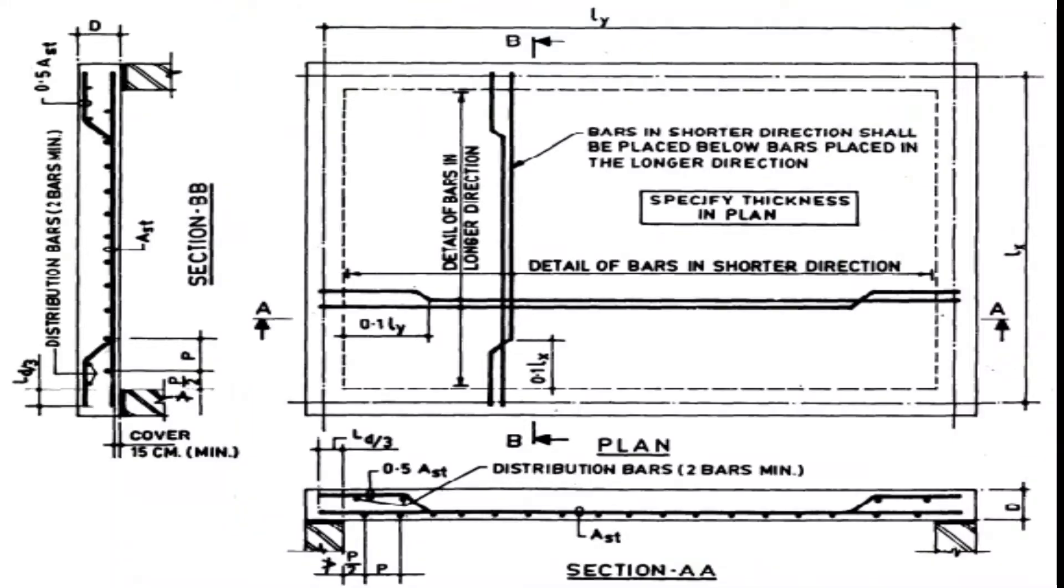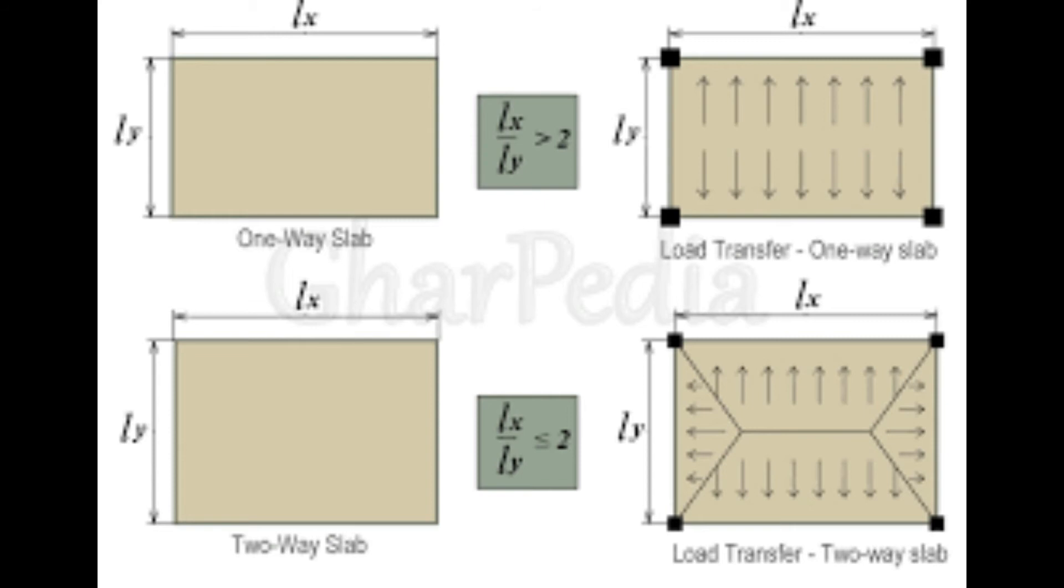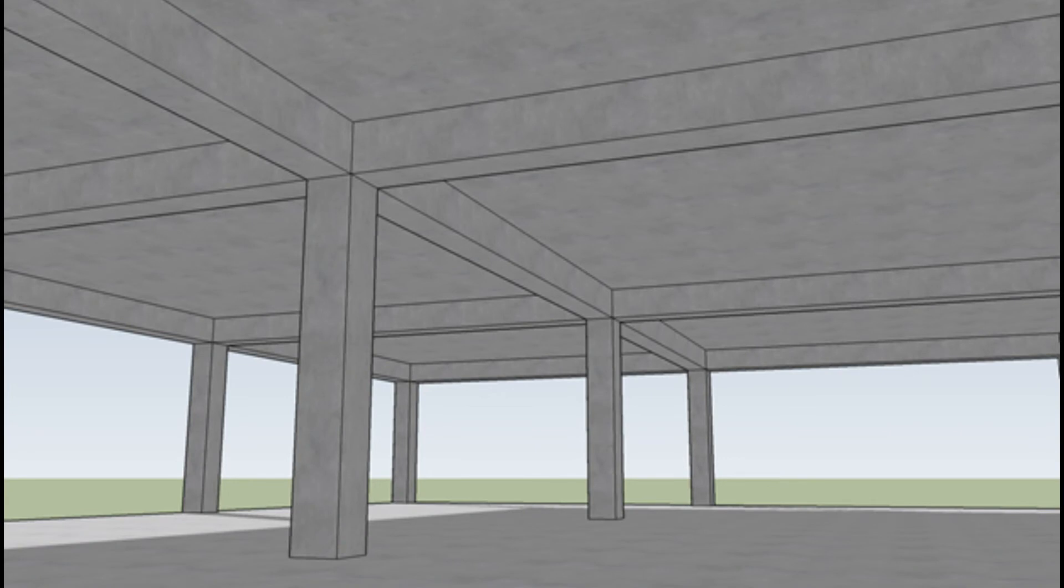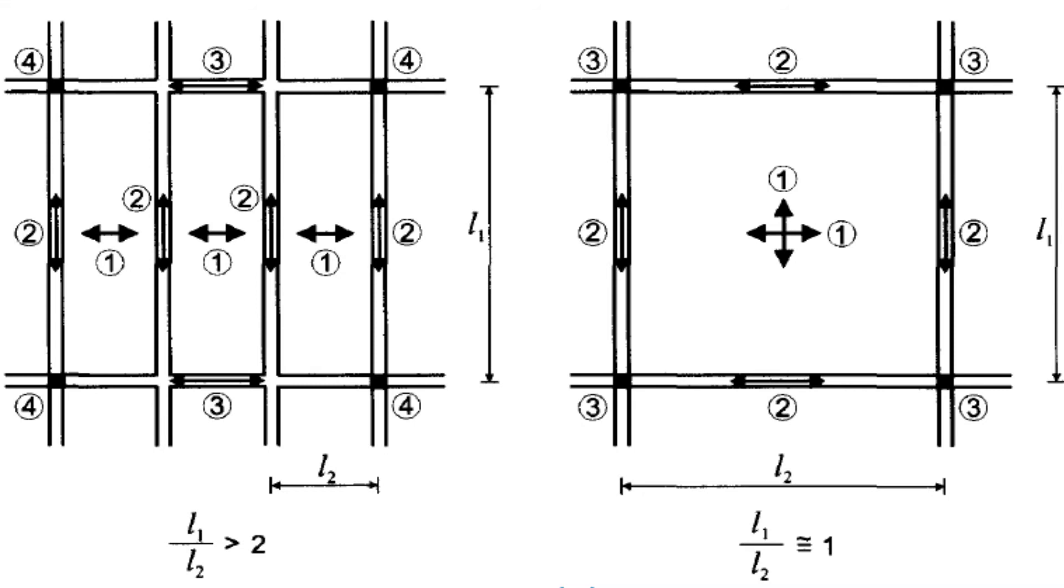The load path in a two-way system is not as clearly defined. The slab transfers gravity load in two perpendicular directions. However, the amount carried in each direction depends on the ratio of span lengths in the two directions, the type of end supports, and other factors. For example, in the slab with beams system shown in figure, the load is transferred from the slab to the beams aligned in the two directions, and then to the columns.